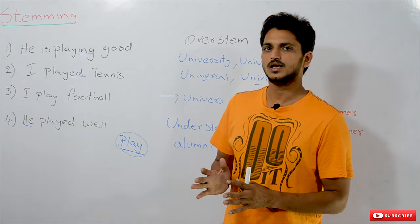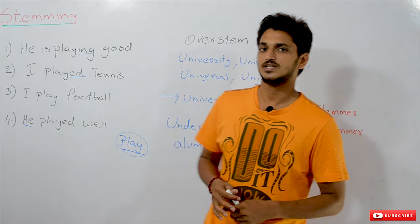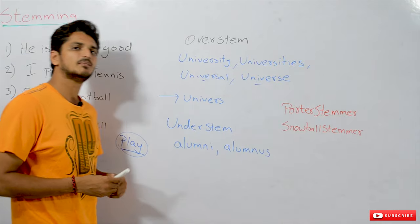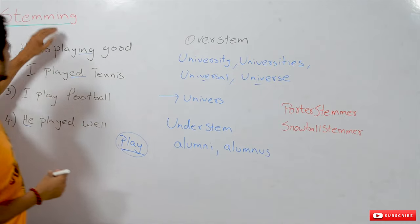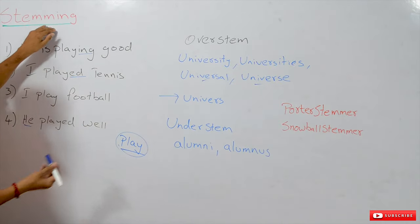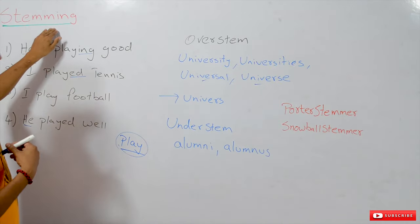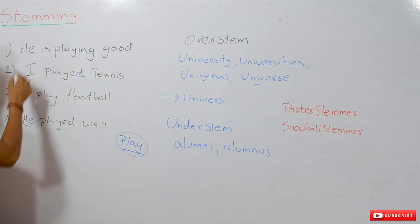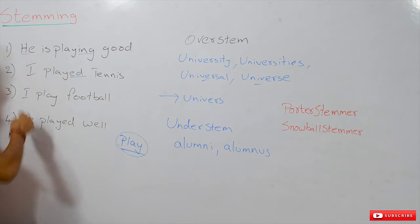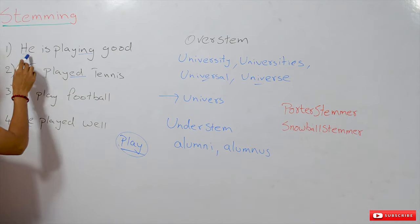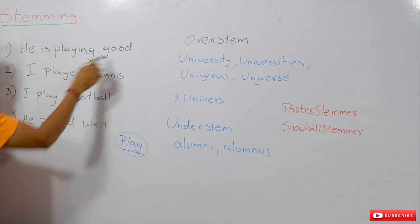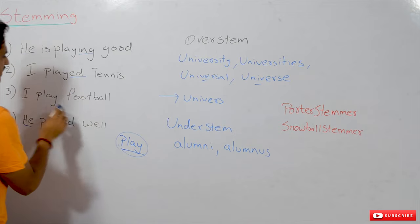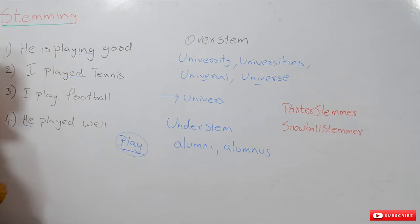Stemming is applied on text data. Let's take an example and understand what stemming is and how it is helpful for us. We consider four sentences: 'He is playing good,' 'I play tennis,' 'I play football,' 'he played well.'